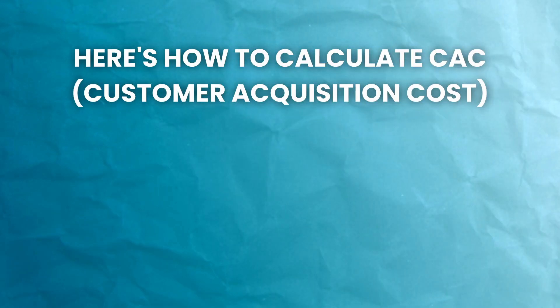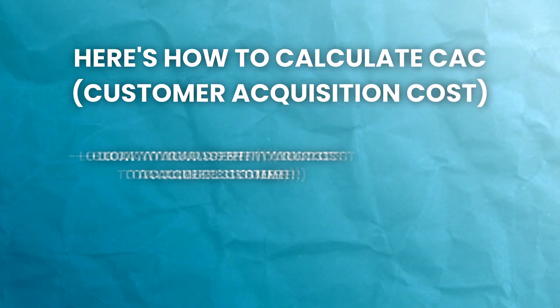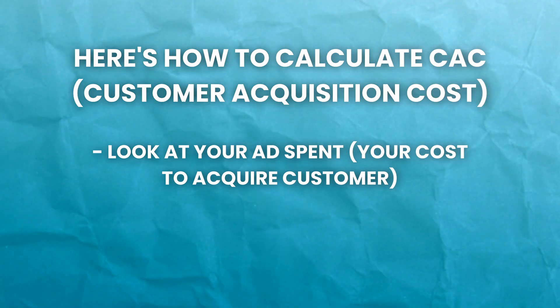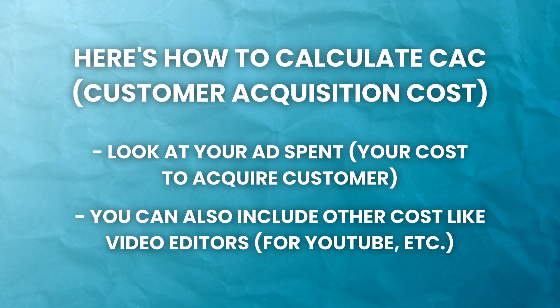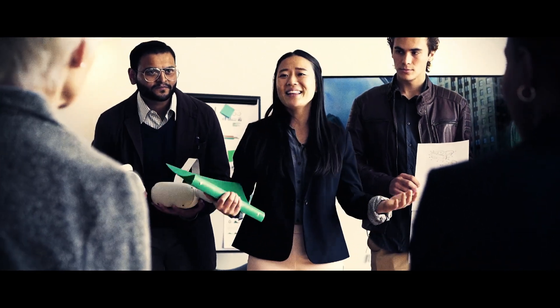To calculate CAC for your business, you might look at just your ad spend — that would be your cost to acquire a customer. But I also include things like video editors, appointment setters, sending DMs, subscriptions, and apps related to sales and marketing for your brand. You might consider those costs part of the cost to acquire a customer. On a monthly, weekly, or yearly basis, you want to know this number. Just like on Shark Tank, they always ask how much it's currently costing you to acquire a customer. It's important to know this number because if you know it, then you can actually scale.